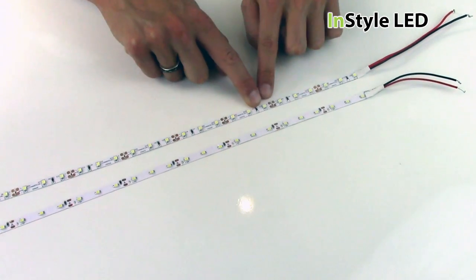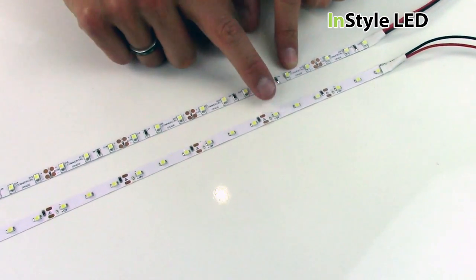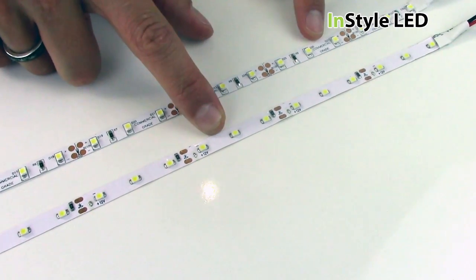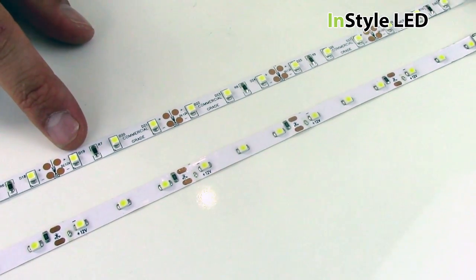The high quality LED strip is 0.8mm wider than the lower quality LED strip.